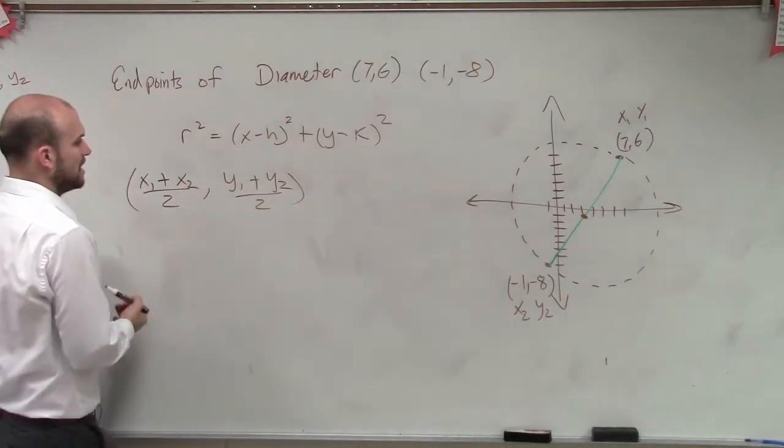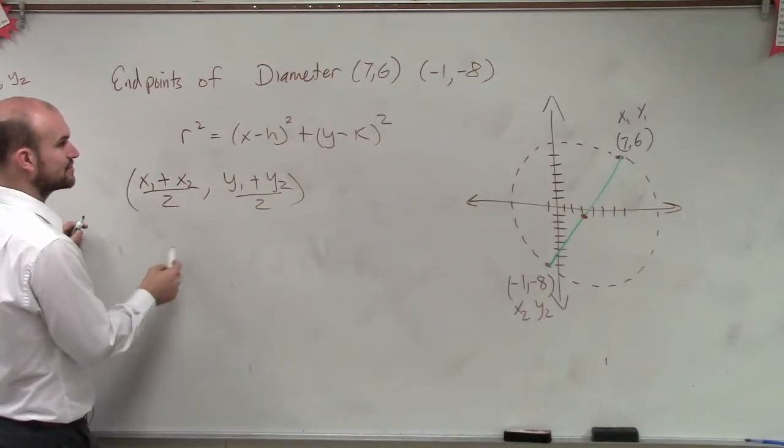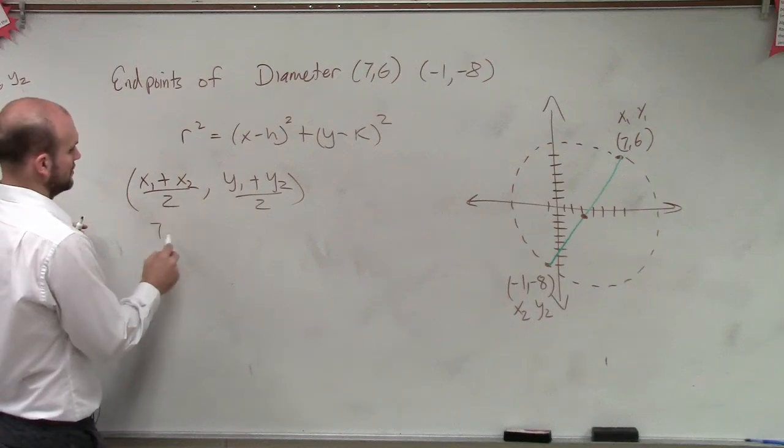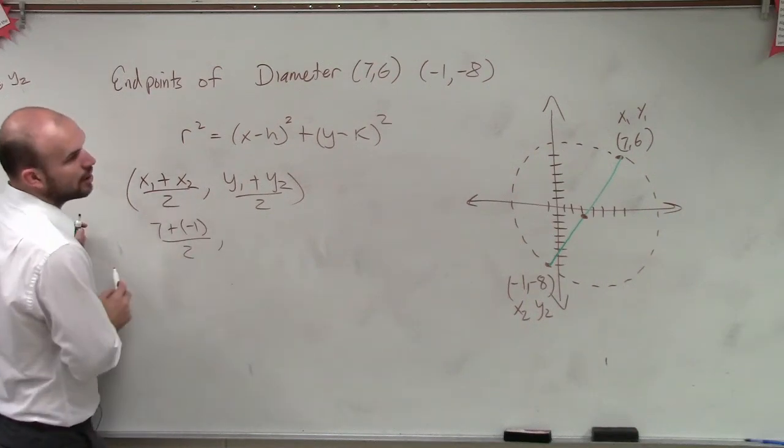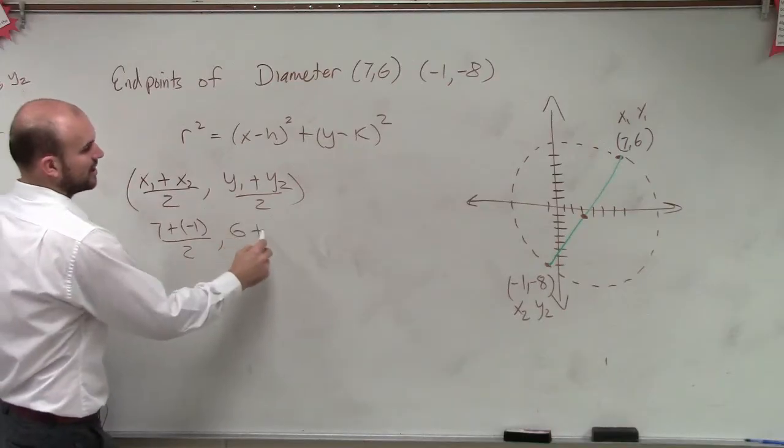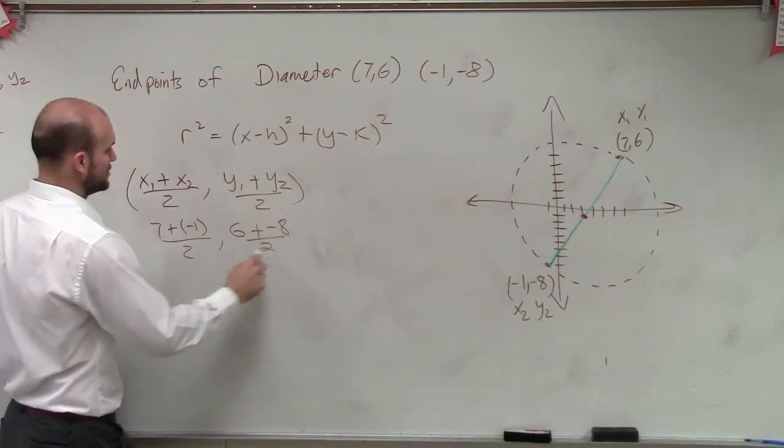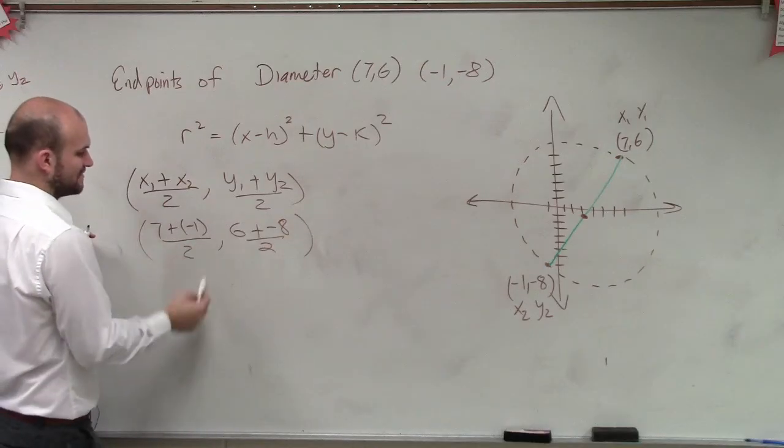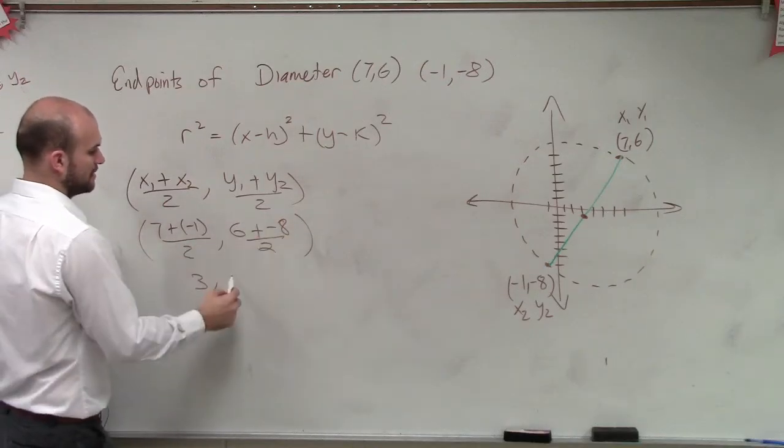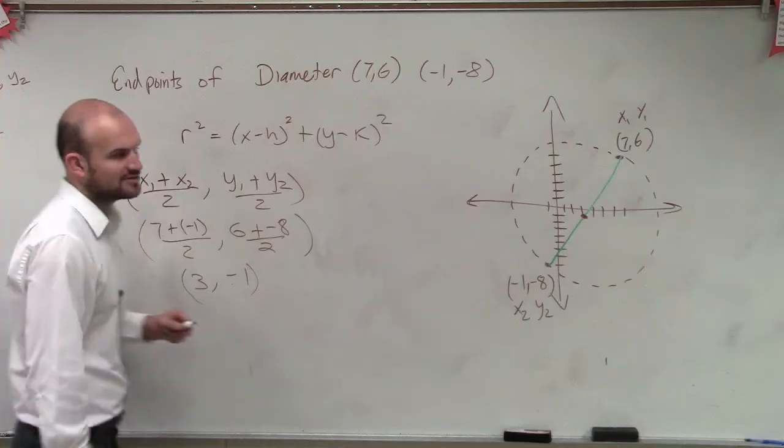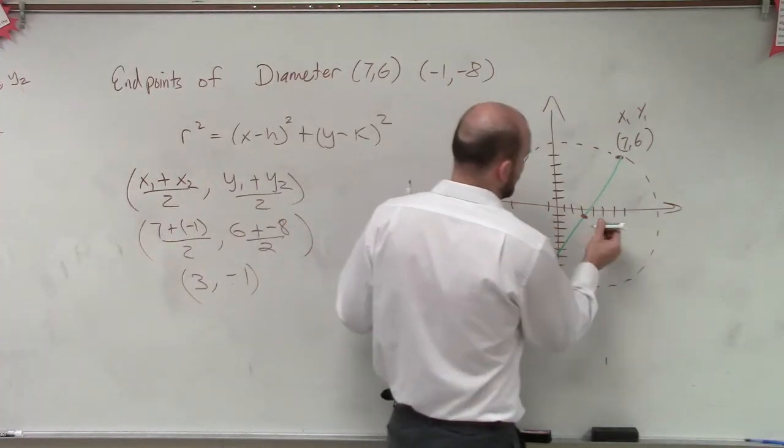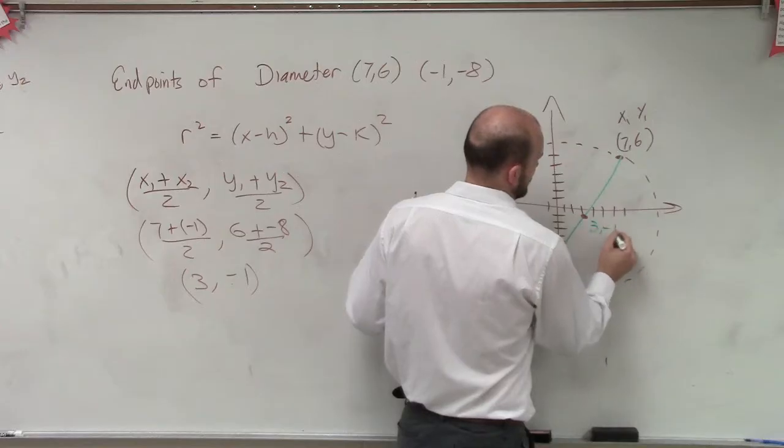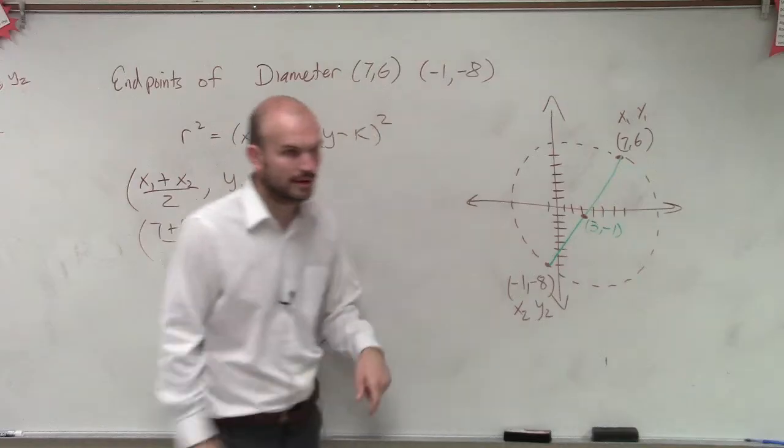So let's add them up. x₁ plus x₂. So x₁ is 7 plus a negative 1, divided by 2, comma, y₁ is 6 plus negative 8, divided by 2. Do my math. 6 divided by 2 is 3, comma, negative 1. I was a pretty good grapher, wasn't I? It looks like the center is at (3,-1).